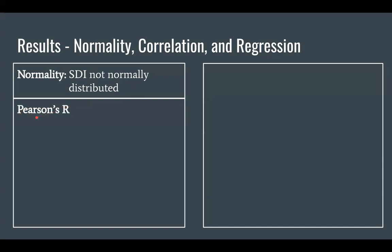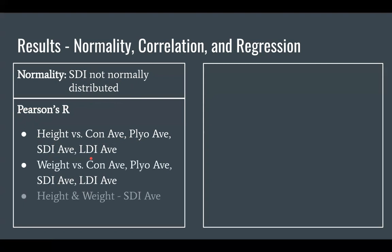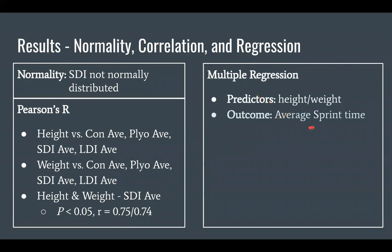Running our Pearson's R correlation, we tested height against the average times of the control, the plyometric, short and long duration across all three rest protocols. And we did the same thing with weight. In the findings, height and weight with that short duration average came back as significantly correlated with a strong positive correlation at that.